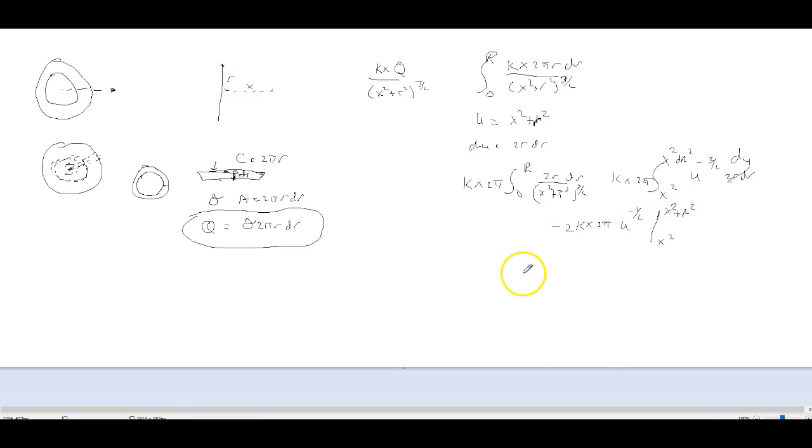And so ultimately I end up with this awful expression, but it's one I can deal with. And that's equal to negative 2kx 2π over the square root of x squared plus r squared minus a negative 2kx 2π all over square root of x squared. And then I can plug in my values for x and r and all the rest of them and get my lovely answers as I see fit. Does that make sense?